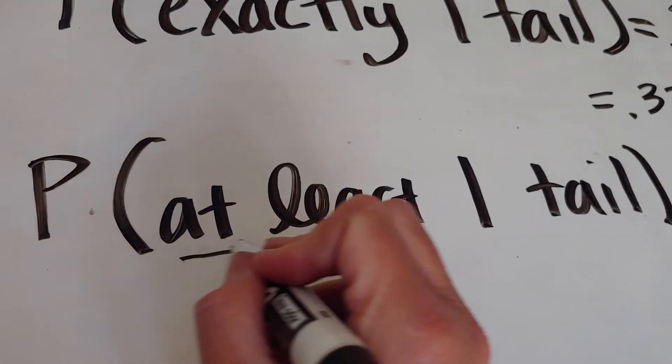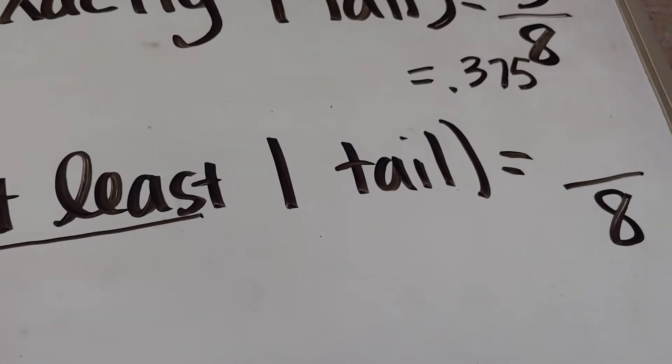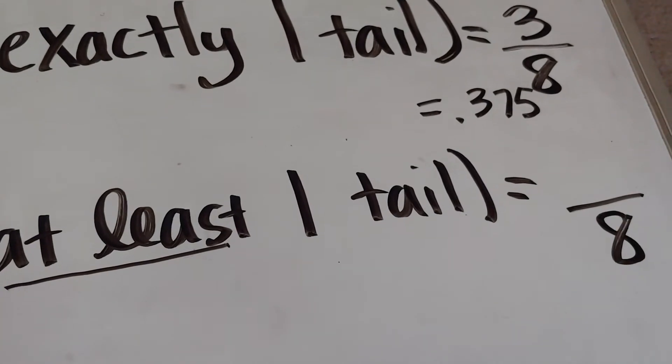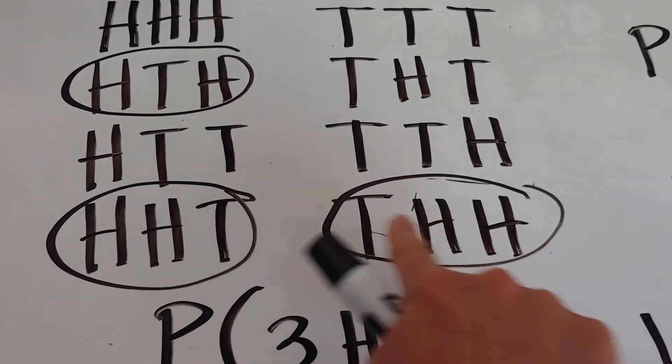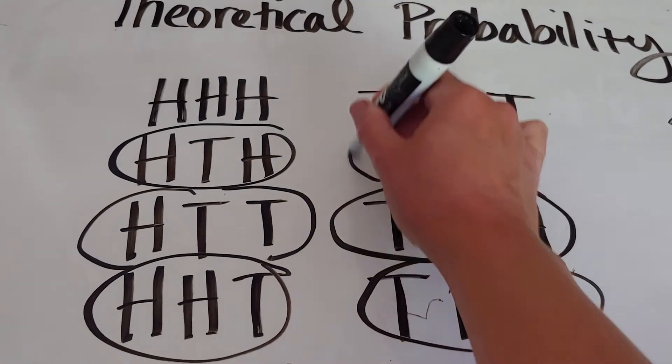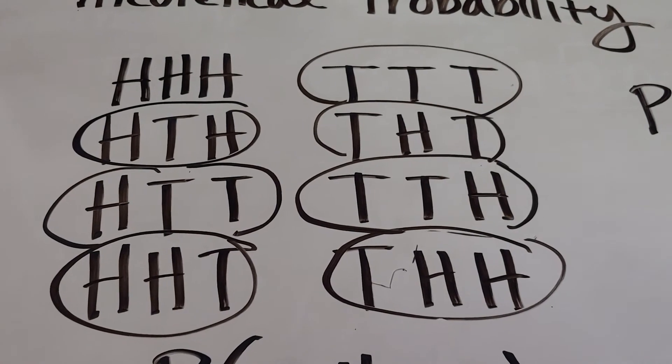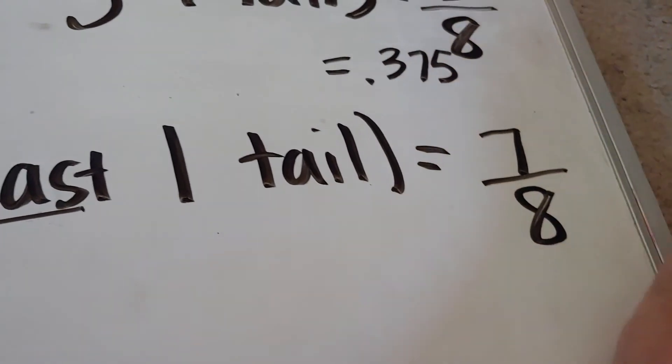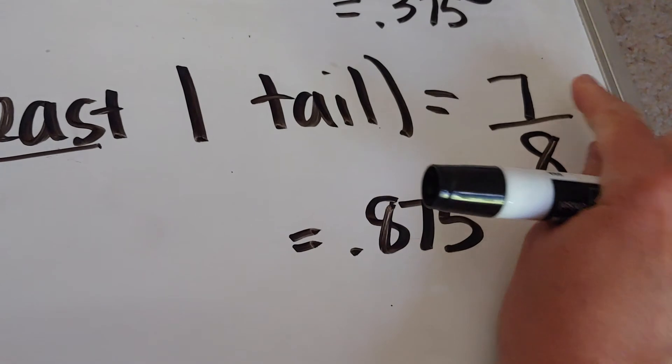Now, at least one tail. Out of our eight, what we're curious about is all of those that have one T, two T's, or three T's. We already have my one T's circled, two T's, and three T's. It looks like the only thing we're excluding is getting all heads. So to get the probability of getting at least one tail, there are seven out of eight ways for that to happen, which would be the same thing as 0.875 if you put this in your calculator.